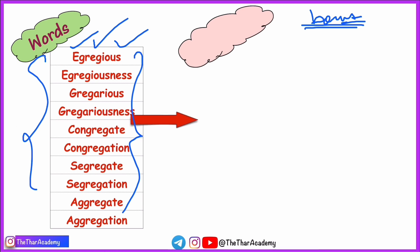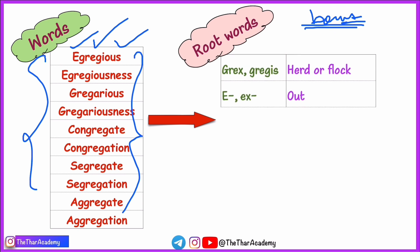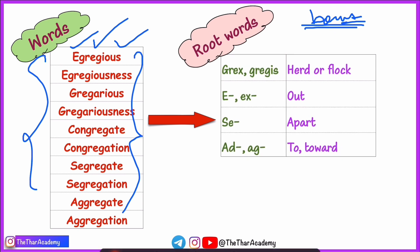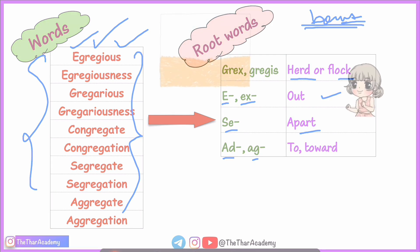In this video we will see root word, prefix, suffix, and use. Let us have a look. The root 'grex' or 'greg' means herd or flock — a group. The prefix 'e' or 'ex' means out. The prefix 'seg' means apart or far. The prefix 'ad' or 'agg' means to or toward. The prefix 'con' means together.